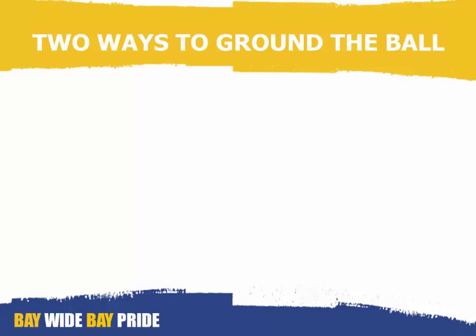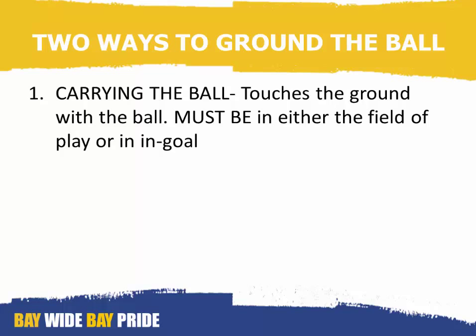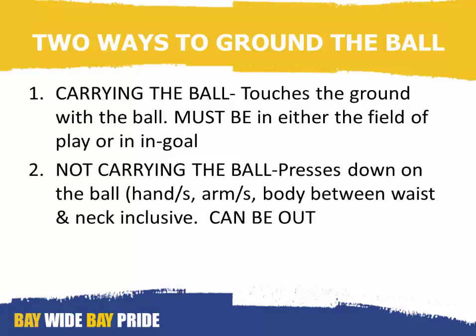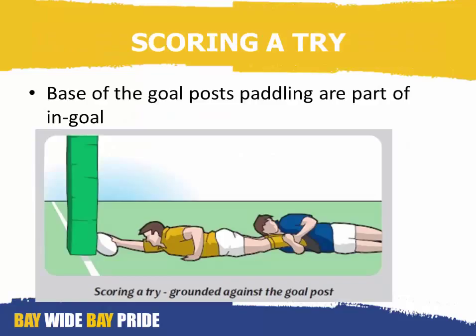There are two ways to ground the ball. Number one: carrying the ball, where a player is carrying the ball and touches the ground with the ball — it must be in either the field of play or in in goal. Number two: if the player is not carrying the ball, he presses down on the ball with his hand or hands, arm or arms, or body between waist and neck inclusive.